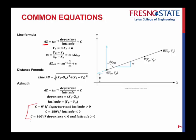If departure and latitude are both greater than zero, then C is equal to zero. C is 180 if the latitude is less than zero. And C is 360 if the departures are less than zero and the latitudes are greater than zero.